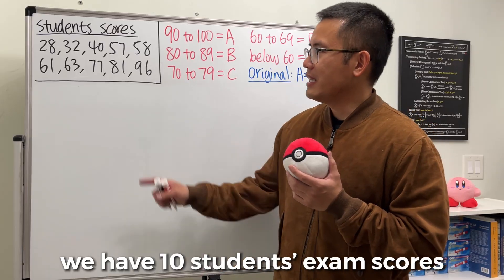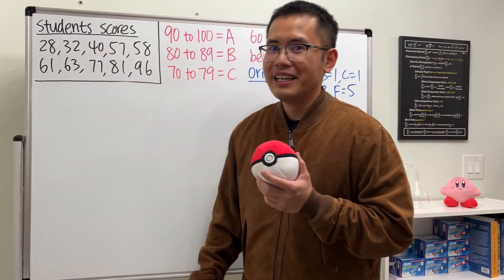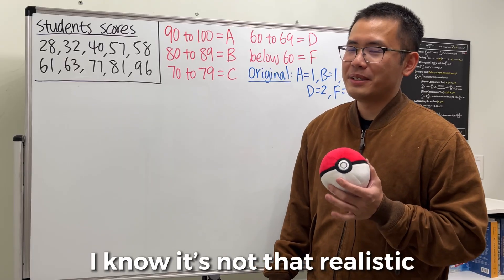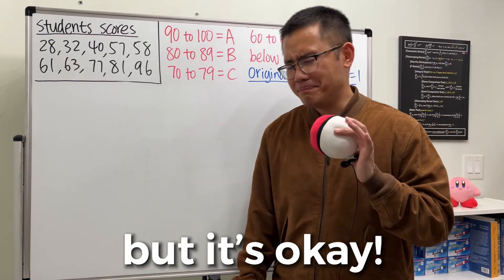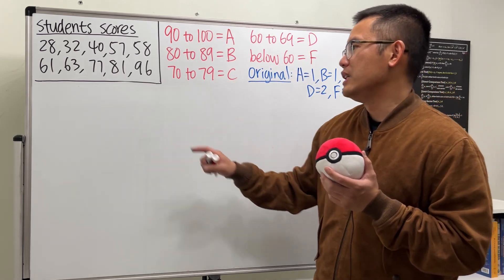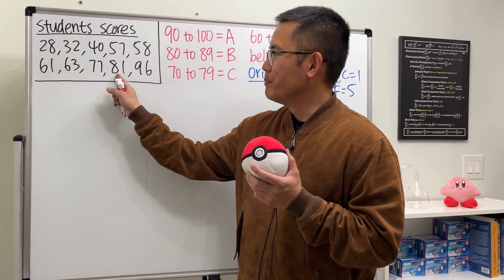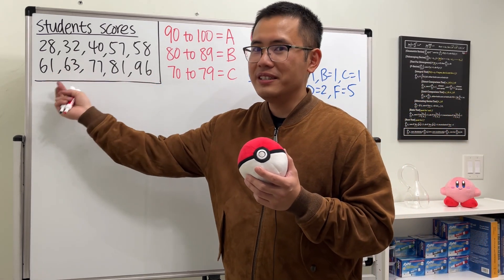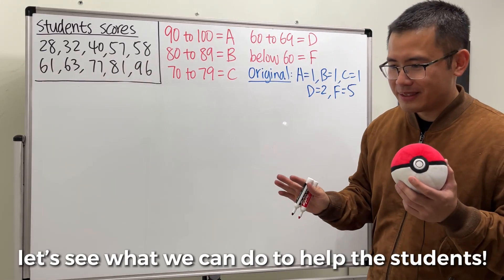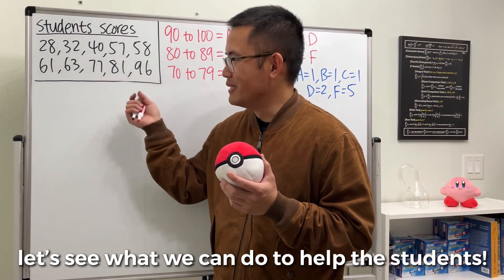Okay, here we go. As we can see, I gave you guys 10 students exam scores. And yes, I just made this up. I know it's not that realistic because I didn't include any zeros, but it's okay. If we use the usual grading scale, then we will only have one A, one B, one C, two Ds and five Fs. And by the way, Ds and Fs, they are not passing. So let's see what we can do to help the students.